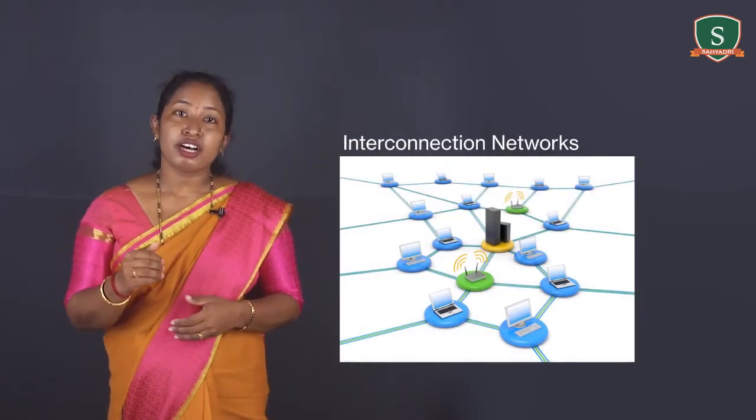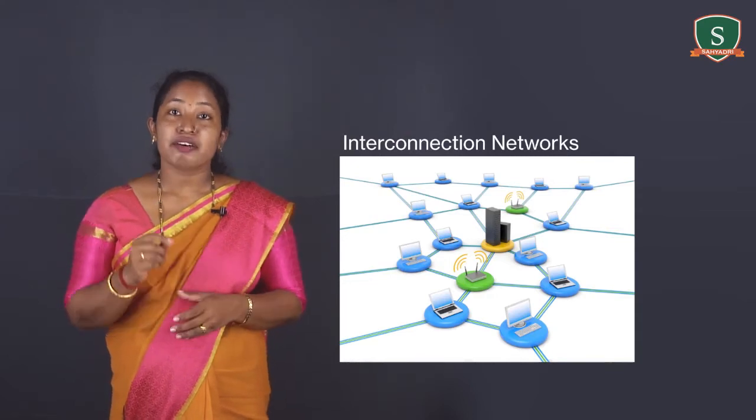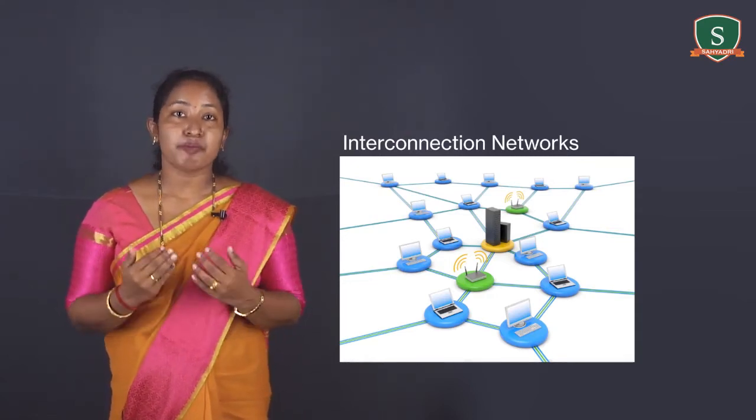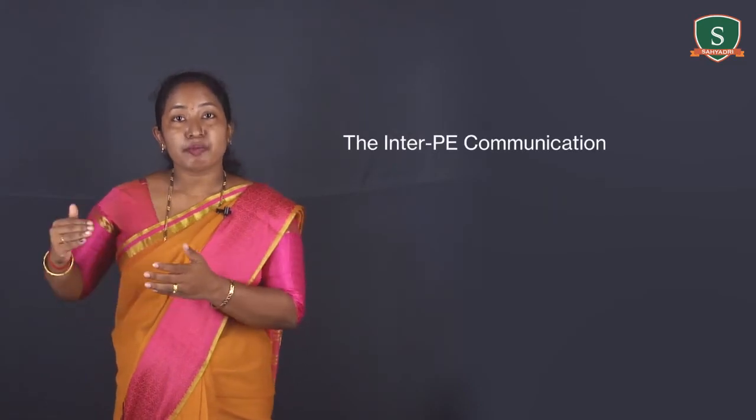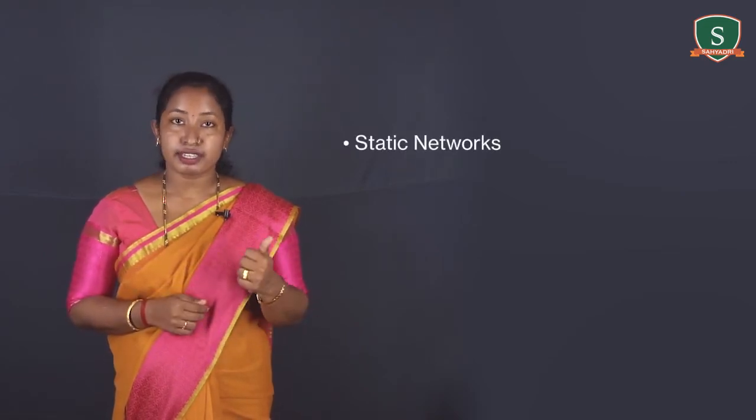Interconnection networks. To govern the communication between processing elements, various interconnection networks have been designed. The inter-PE communication is all about the routing of data from one PE to another, either directly or through intermediate PEs. Routing of data is governed by a set of routing functions. Interconnection networks are classified into two categories: static networks and dynamic networks. There are various types of static networks, all of which are categorized by their node degree. Node degree means the number of links connected to the node.